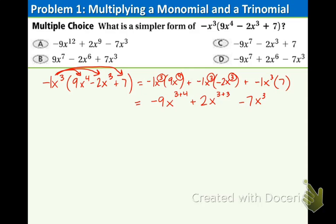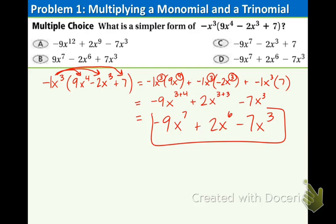We are basically at our answer: negative 9x to the 7th — because 3 plus 4 is 7 — plus 2x to the 6th — because 3 plus 3 is 6 — and bring down the last term, minus 7x to the 3rd. That is our simplified form and that matches up with option D.